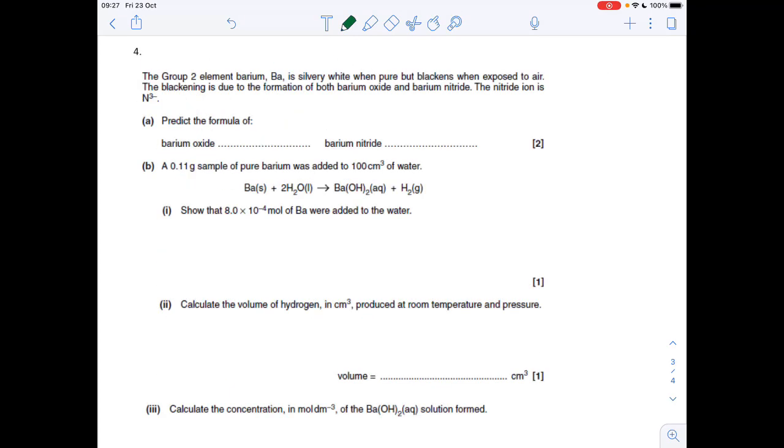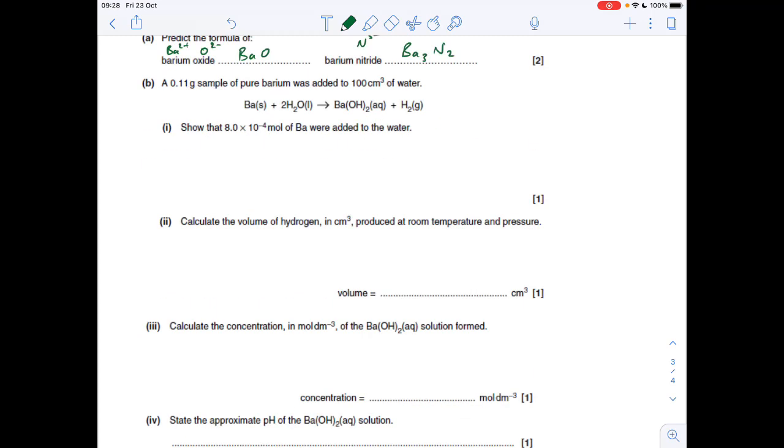Question four: we've got to predict the formulas of two ionic substances. Barium forms a 2+ ion, the oxide ion is 2-, so we just need one of each: BaO. The nitride ion, the ion of nitrogen, is N3-. If we're combining Ba2+ with N3-, we need three bariums - that takes us to 6+ - and two nitrides - that takes us to 6-. So the charges are equal and opposite: Ba3N2.